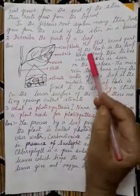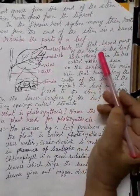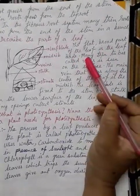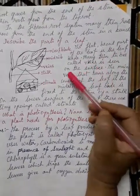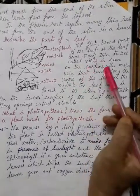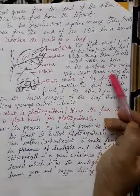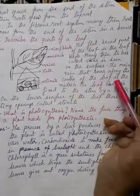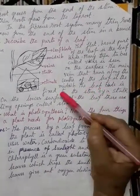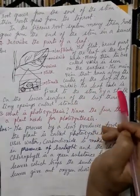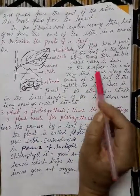The flat broad part of the leaf is the leaf blade. Many thin tubes called veins are seen on the surface. The main vein that runs along the center of the leaf is the midrib. The leaf blade is fixed to the stem by a stalk.